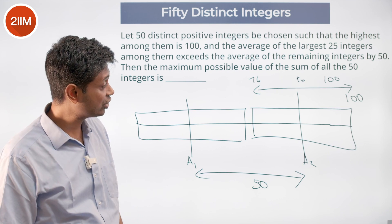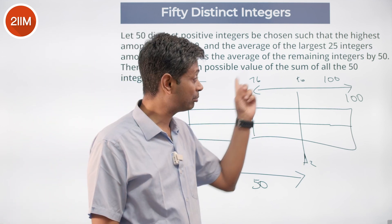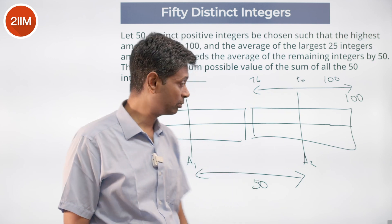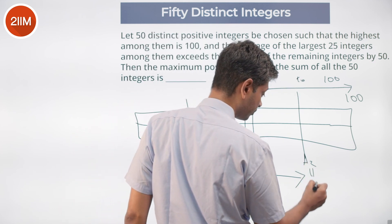What is the average among these? Will be the middle term, 100 plus 76 by 2, 176 by 2. This average will be 88.